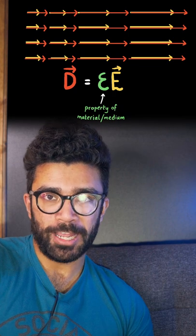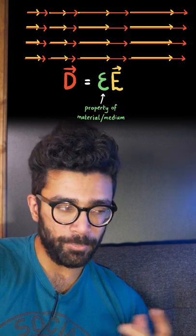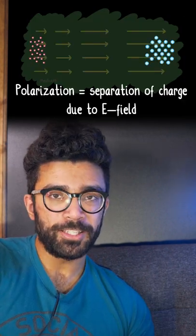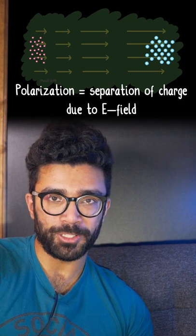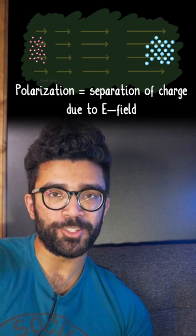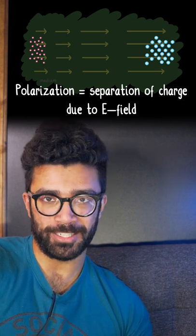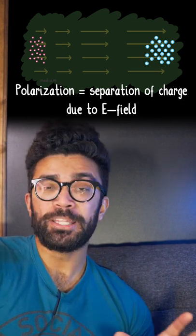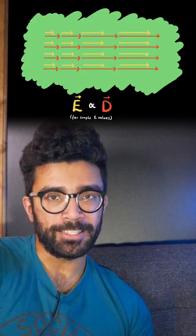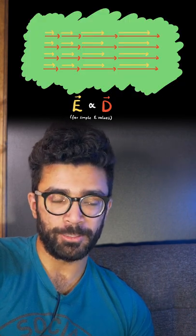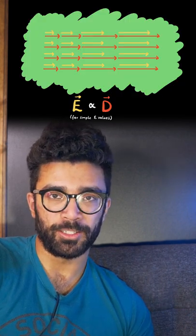Epsilon actually represents how easily the medium that we're in polarizes. In other words, it's a way to encode the material that we happen to be studying into our mathematics. So, within a single material, the E- and D-fields are simply proportional to each other.